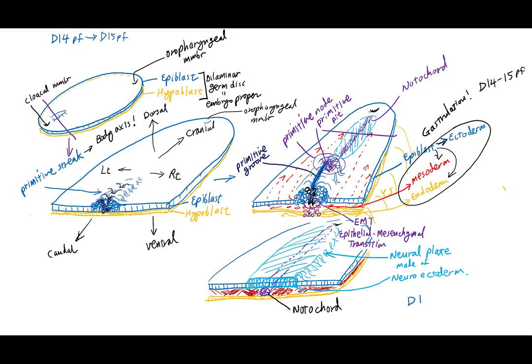Neural plate formation occurs around day 15 post-fertilization, as soon as the notochord starts to appear from the primitive node. This marks the beginning of nervous system development, called neurulation. So at the beginning of week three, two very important processes in embryonic development begin: gastrulation, where the three germ cell layers are laid down, and neurulation, which initiates the formation of our nervous system.